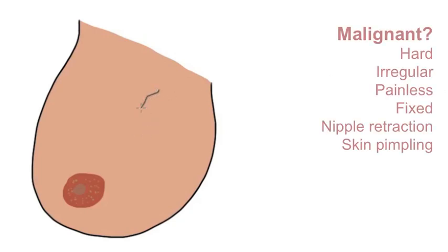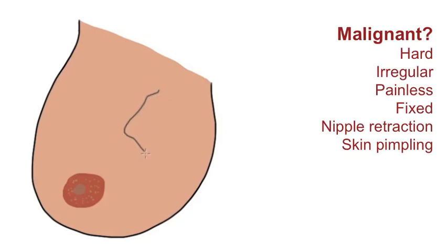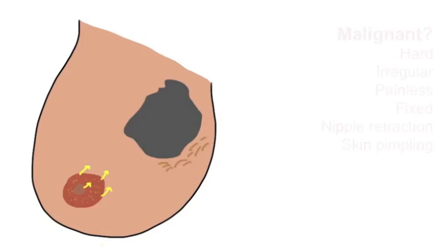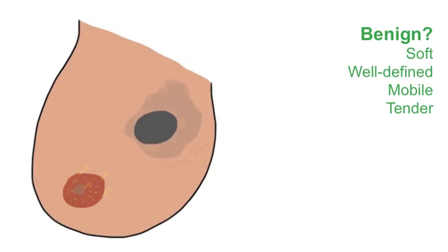A hard, irregular, painless and fixed lump with nipple retraction or skin pimpling is more likely to be malignant, than a soft, well-defined, freely mobile lump that might be tender.